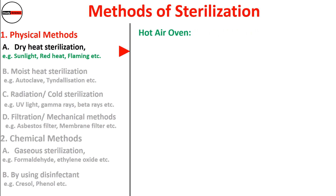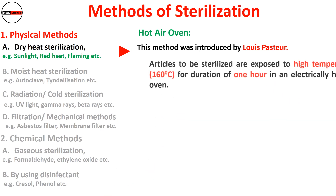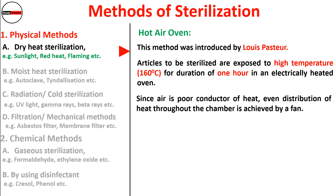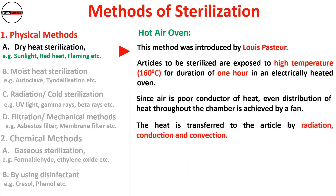The next dry heat method is the hot air oven, widely used in laboratories for sterilization of glassware, metals, etc. This method was introduced by Louis Pasteur. Articles are exposed to 160°C for one hour in an electrically heated oven. Since air is a poor conductor of heat, even distribution is achieved by a fan. Heat is transferred to the article by radiation, conduction, and convection.